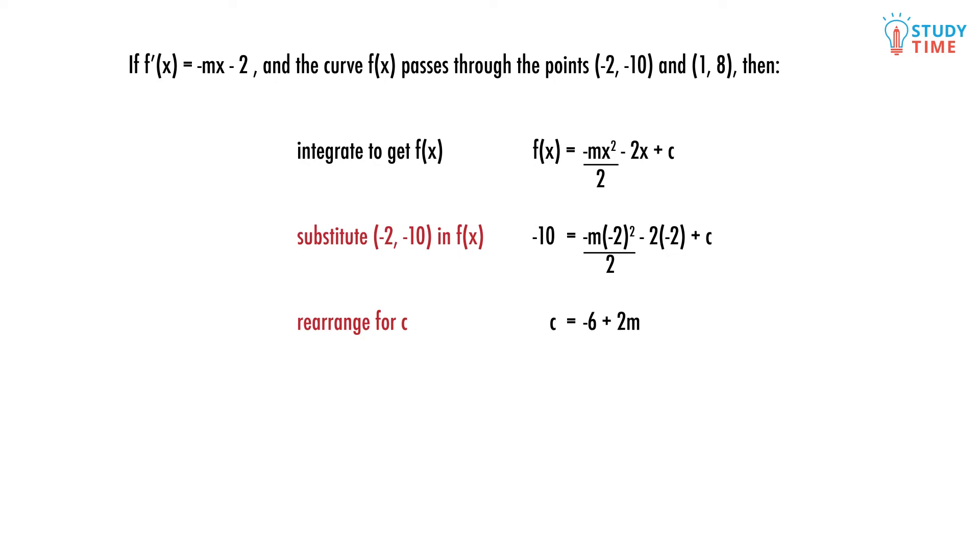So how about we substitute in our other point (1, 8)? Why might we do this? To set up a simultaneous equation to find the value of M. We have two unknowns, C and M, so we need two different points to solve it. We know that both C and M are constants and so should be the same value for both equations.